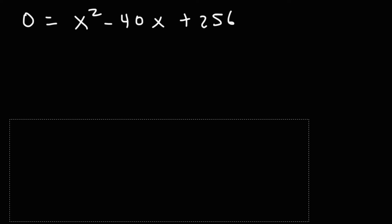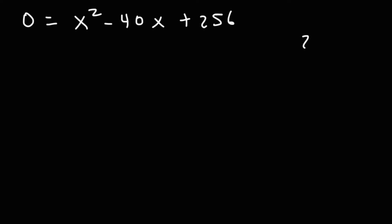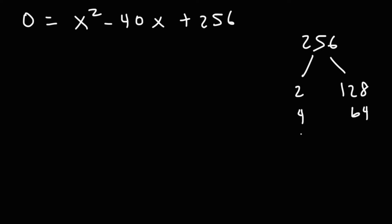Now let's see if we can factor this expression. What two numbers multiply to 256 but add to the middle coefficient, negative 40? 256 is divisible by 2 — dividing gives 128. It's not divisible by 3, but it is divisible by 4 — dividing gives 64. If we divide by 8, we get 32. And 8 plus 32 is positive 40, so negative 8 and negative 32 will give us negative 40.